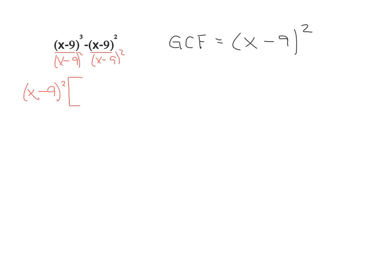For the first term, we're taking x minus 9 to the third and dividing it by x minus 9 to the second. That will leave the base x minus 9 to the 3 minus 2, or first power.